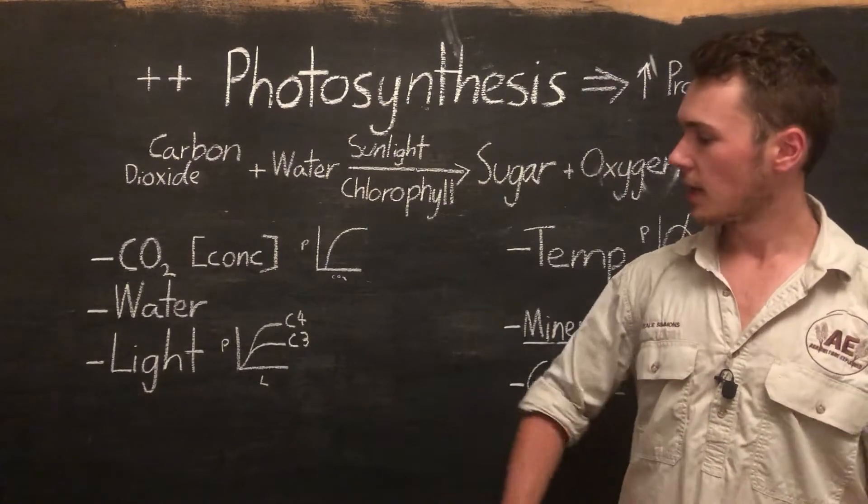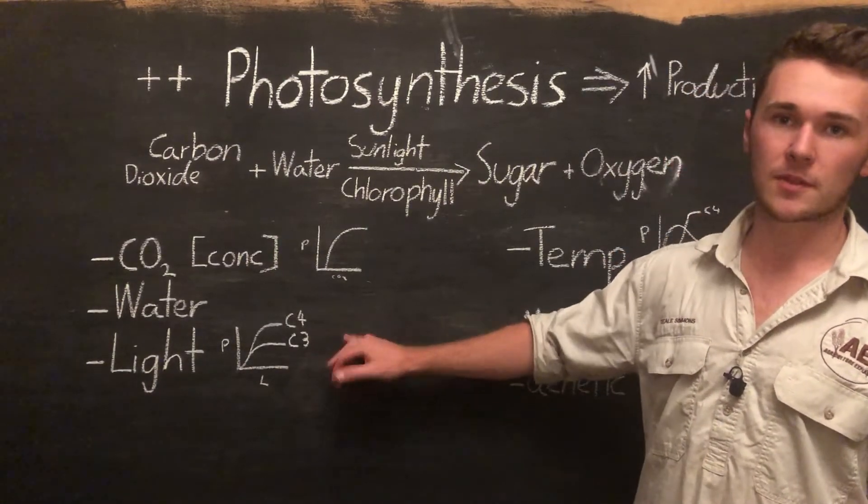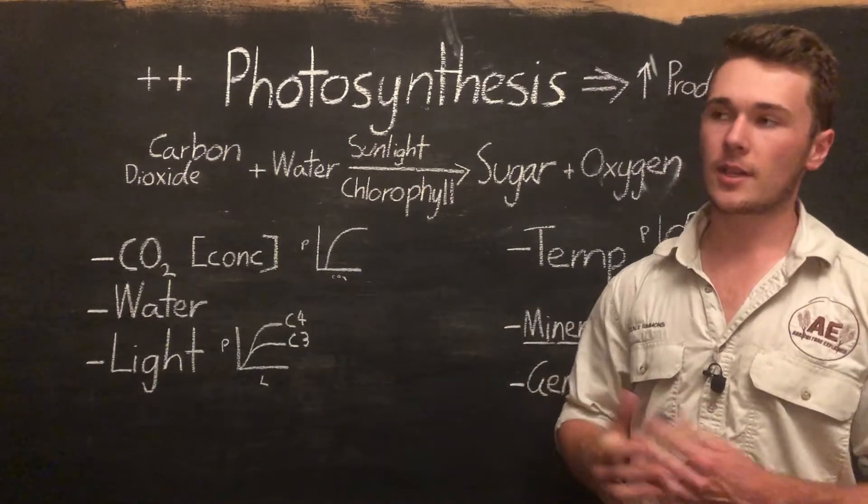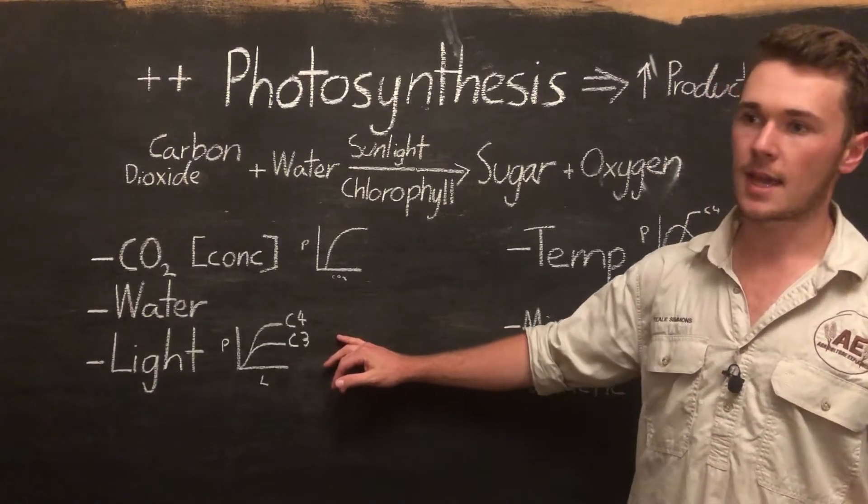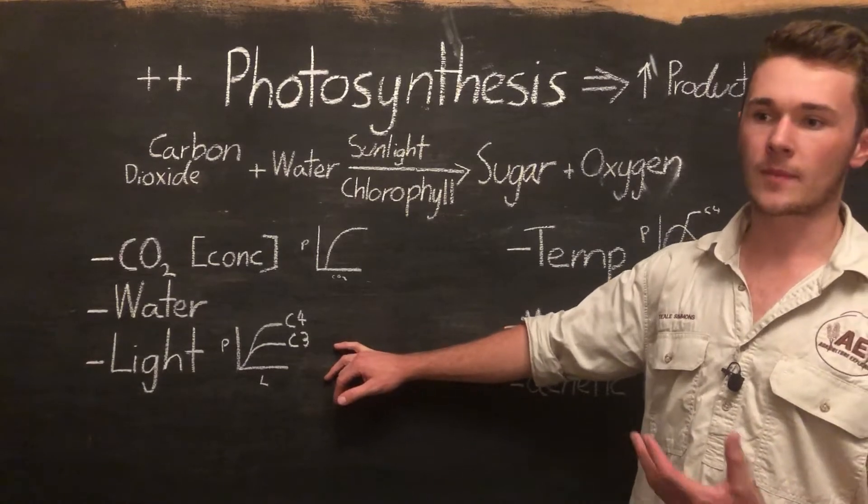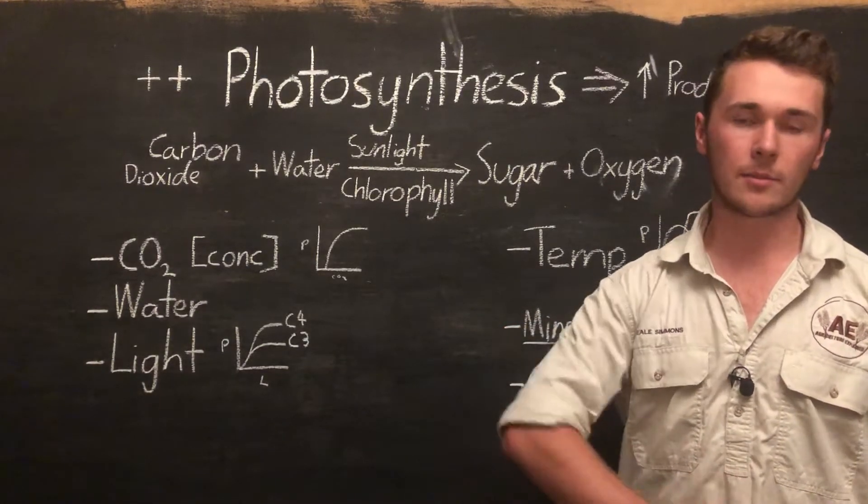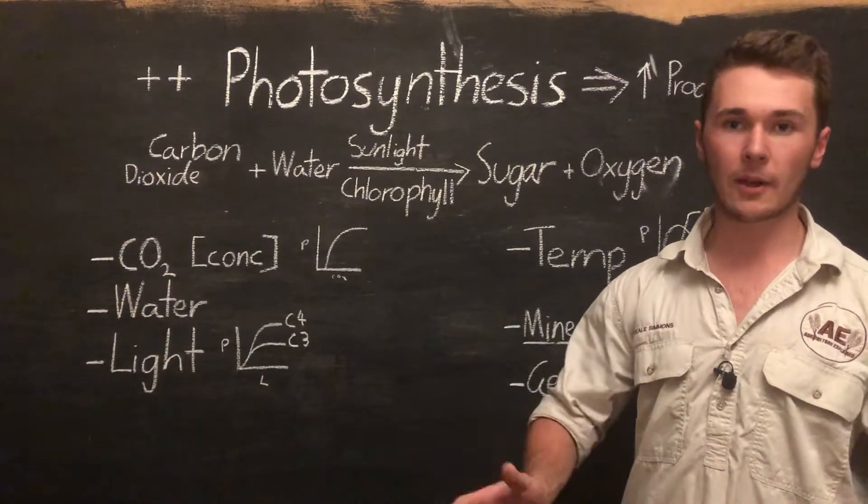When we increase the light concentration, photosynthesis rates are going to increase to a point. The reason why it increases to a point is that it's almost similar to having a fixed amount of ovens. If we only have one oven, we can only put say 10 cakes in there despite how much actual cake mixture we have.